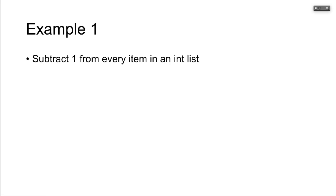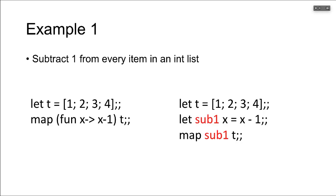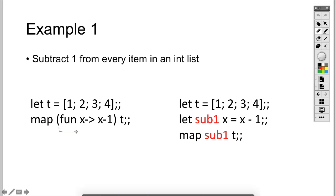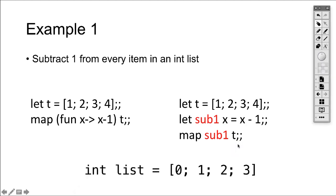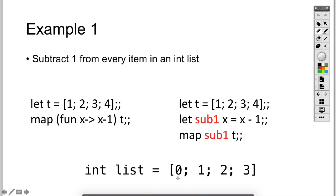Now let's look at a few more examples. First example: subtract one from every item in the list. Our list is [1, 2, 3, 4]. We can create an anonymous function — that anonymous function takes x and subtracts one — and send it to map as an argument. Or we can create a named function. Let's create a function sub_one that takes an x and returns x minus one, and then send that function to the map. The map applies sub_one to every member, so the result will be [0, 1, 2, 3].